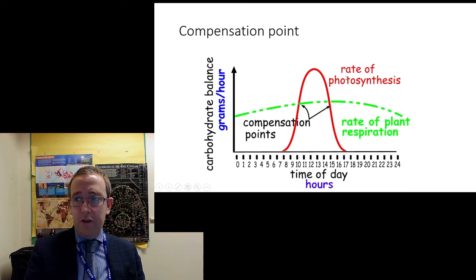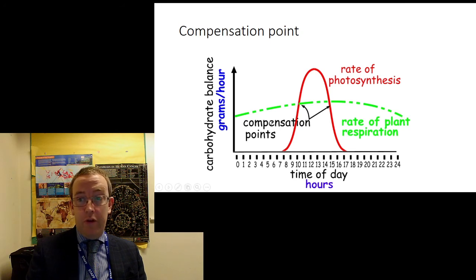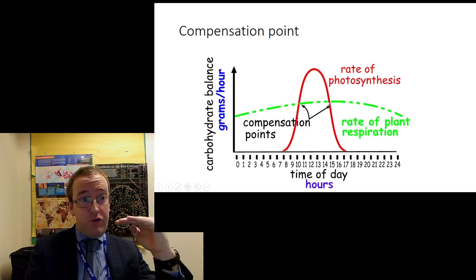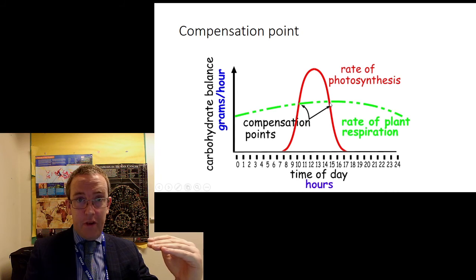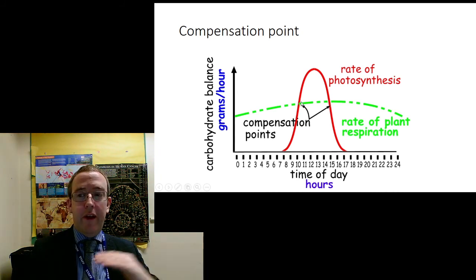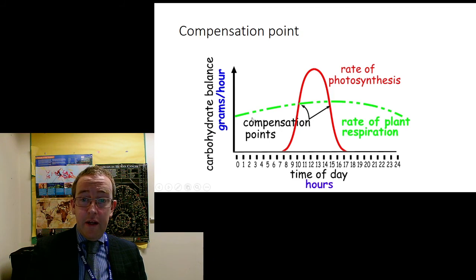But this line here shows photosynthesis. So, from here to here, in the daylight hours, it's producing more oxygen. It's producing more oxygen or producing more sugar than it's using. And in these areas, it's taking in more of those things because of the lack of light. These points here, where the amount of oxygen produced and used, the amount of sugar produced and used, are exactly the same. Those are called the compensation points. That's when the plant is absolutely neutral. And it might be that you need to find a light level in an experiment that leads to that exact compensation point.